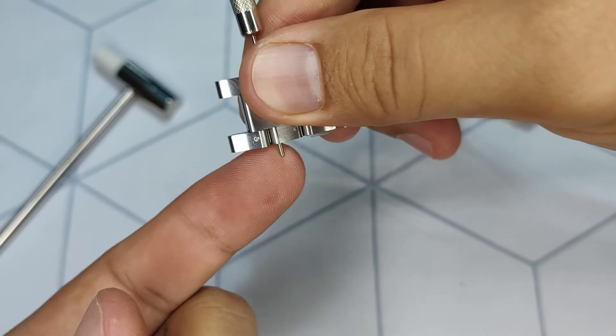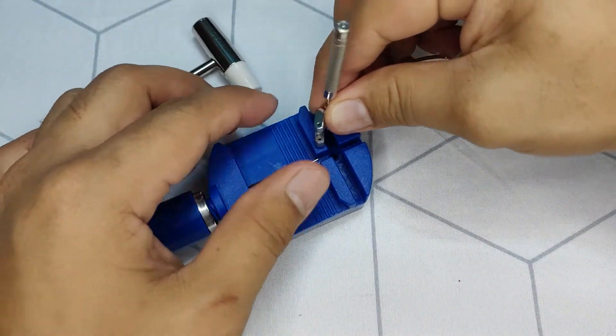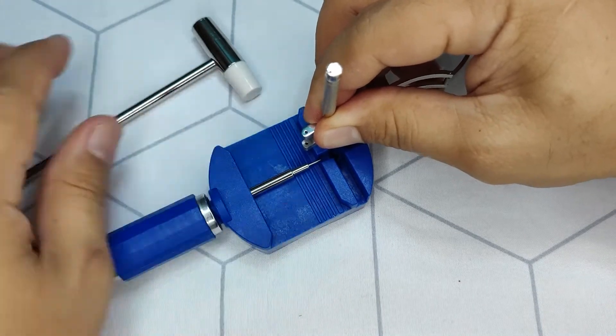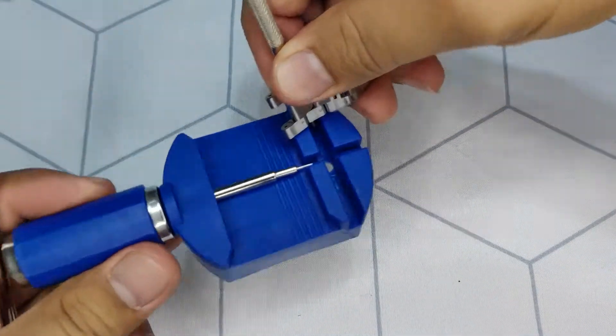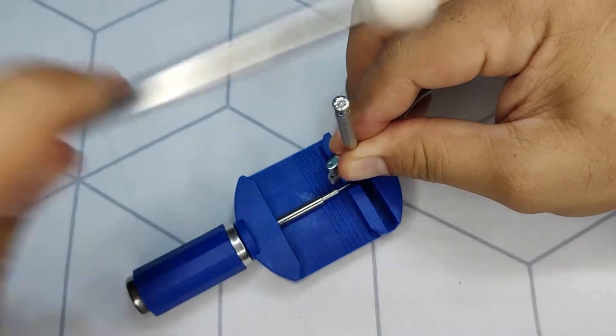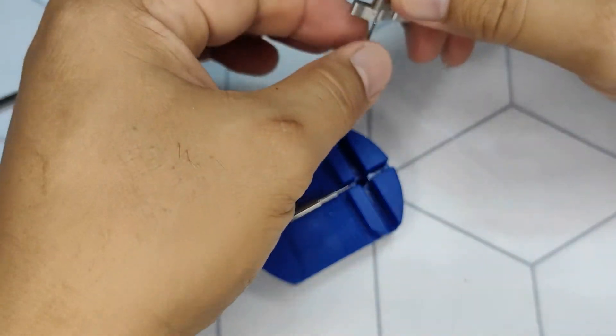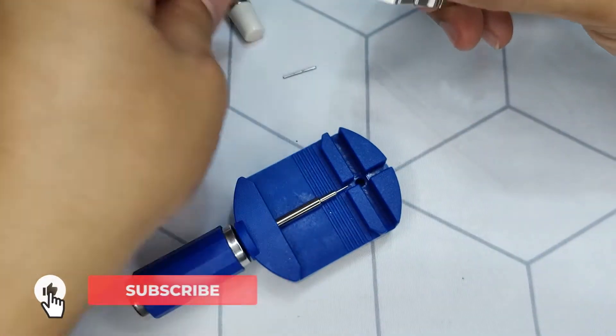And finally, the pin is showing. Now place the watch on a platform where the pin can be pushed straight down. If you find this video helpful, please support me by hitting that subscribe button and notification bell.